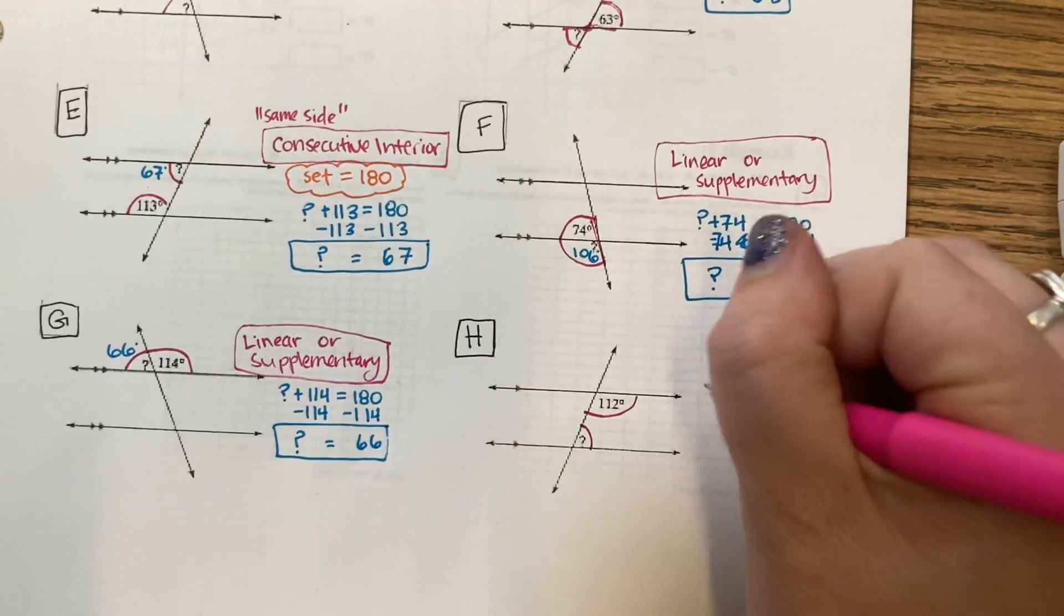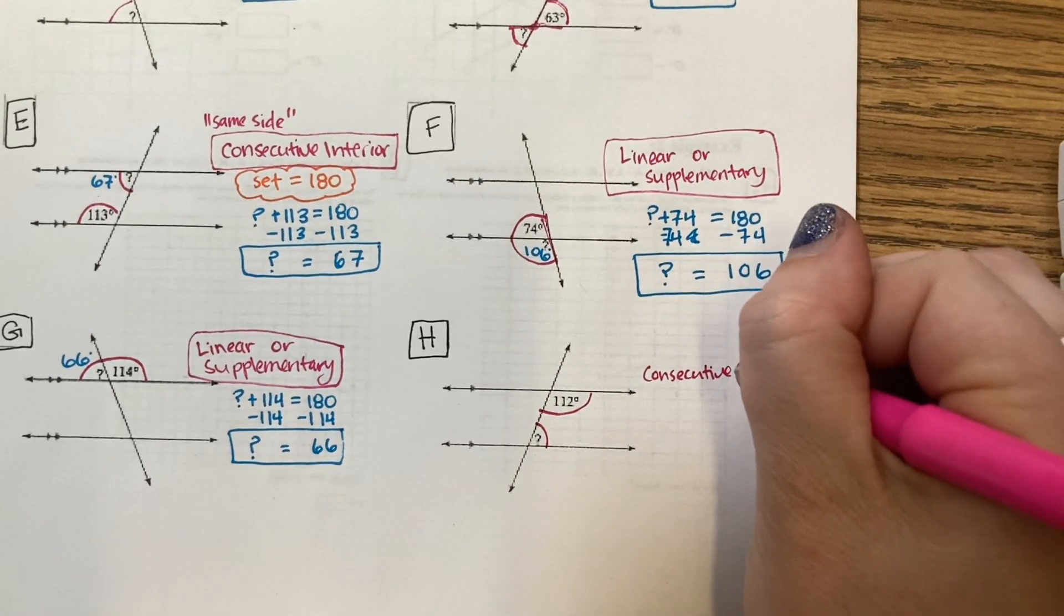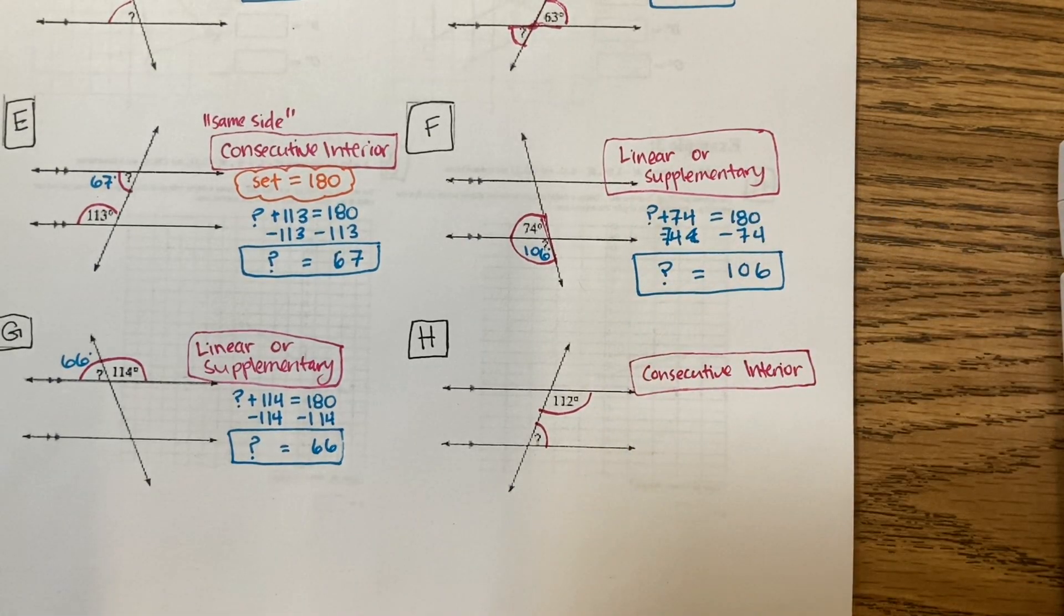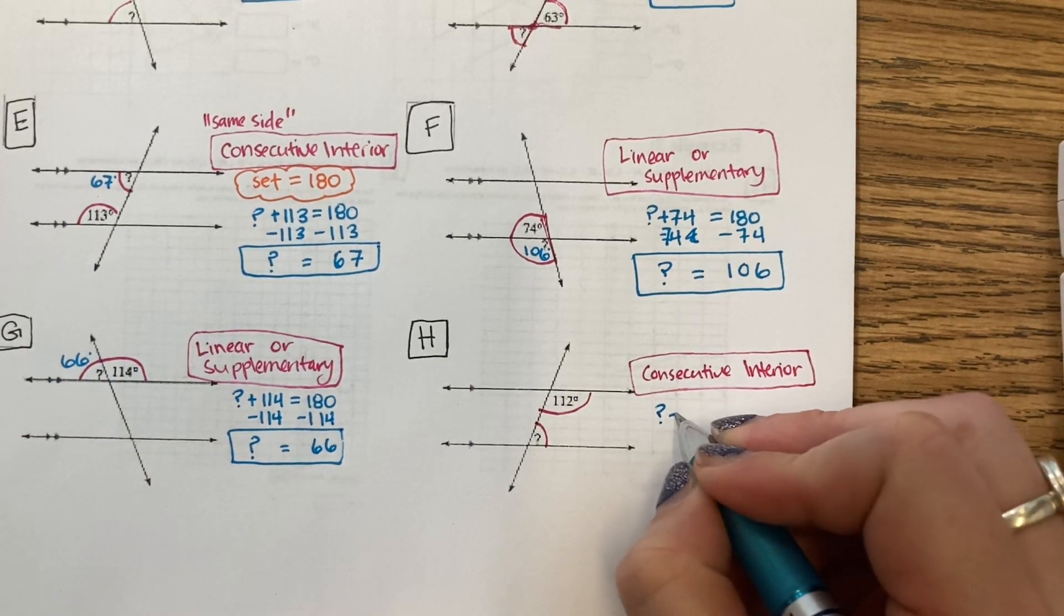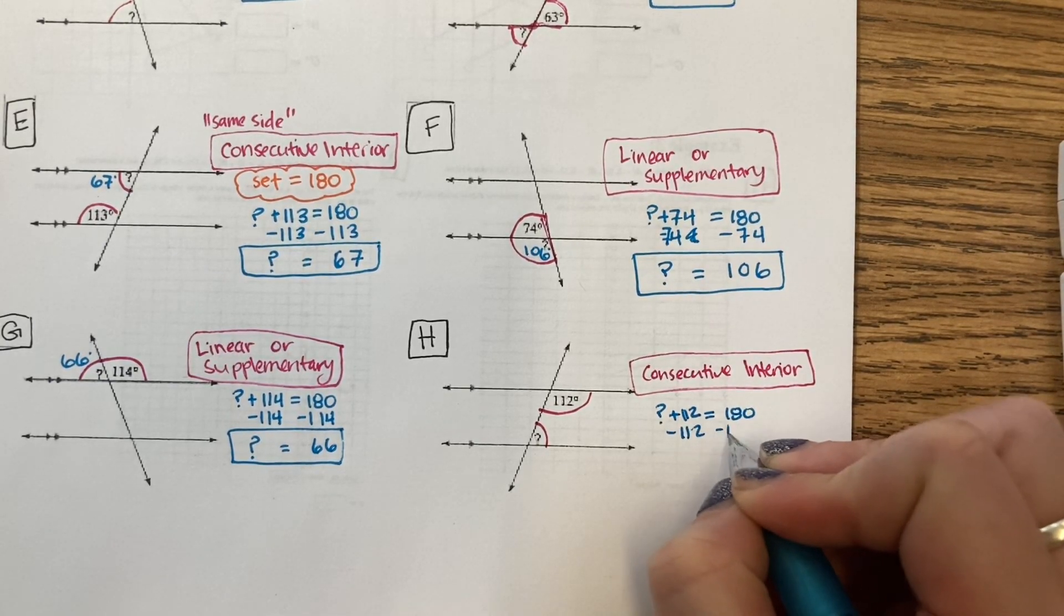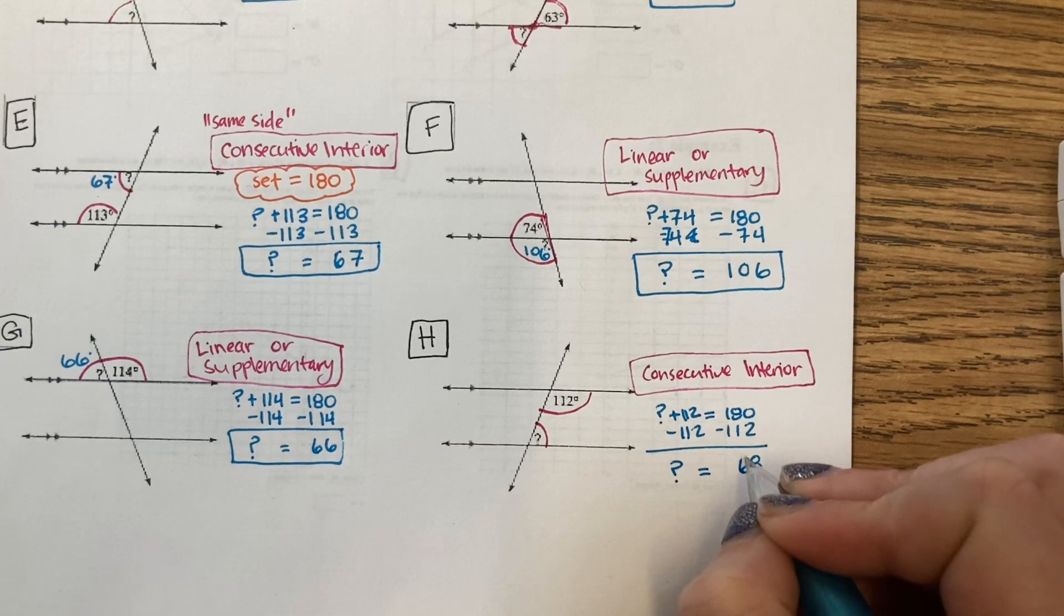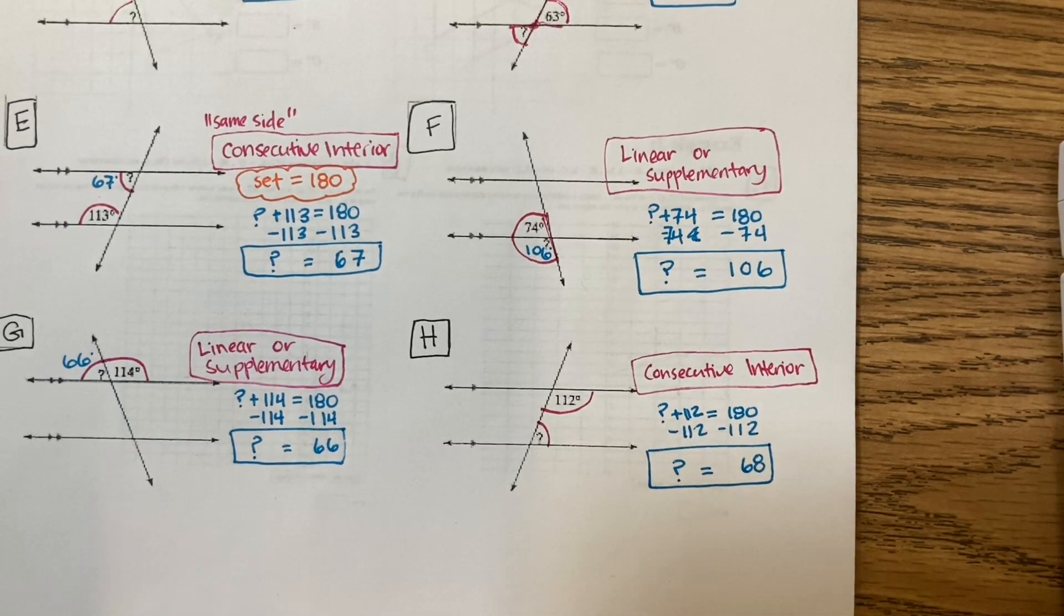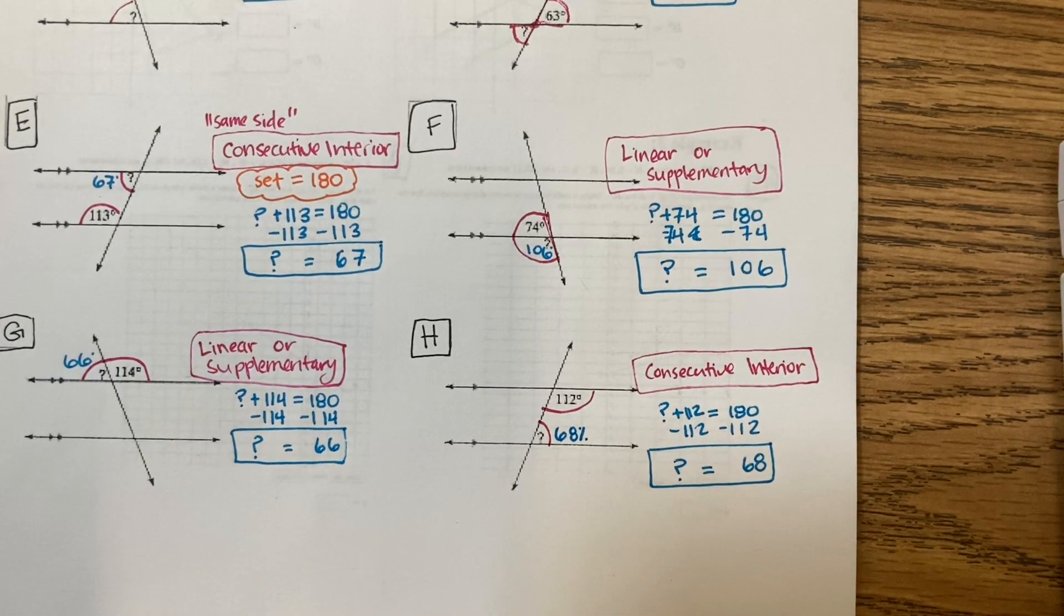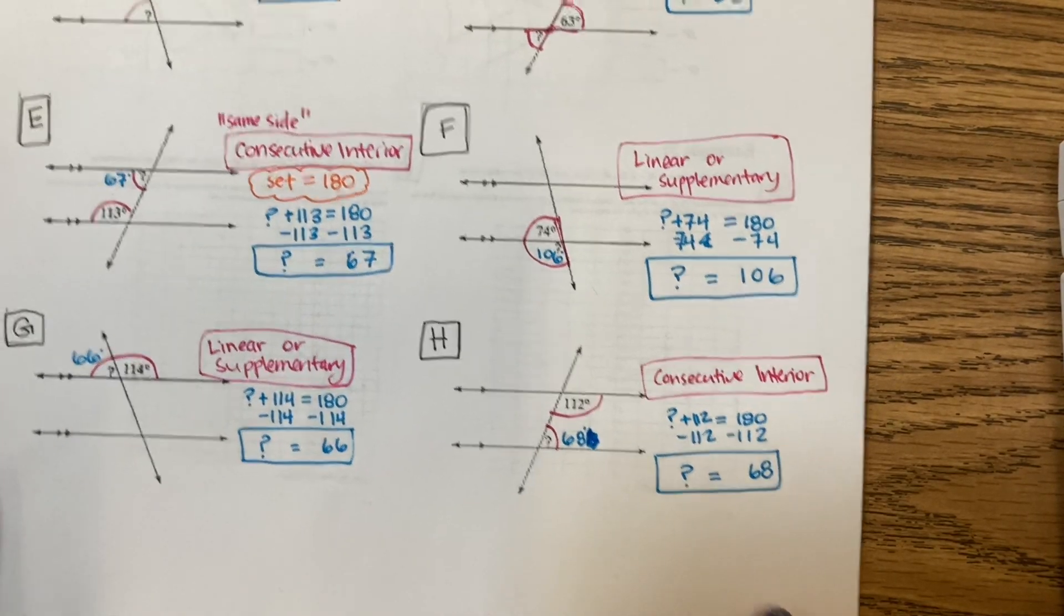These ones are on the same side. Consecutive interior, inside the parallel lines. They're different sized angles, so I'm going to say that together they equal 180. Minus the 112. That's 68 degrees. And that was the review on transversals.